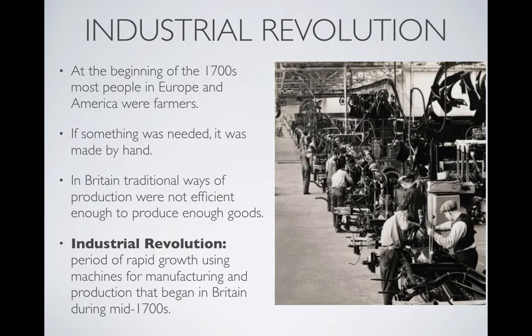However, in about the mid-1700s in Great Britain, the traditional way of producing things was not efficient enough to produce enough products. Britain's population was rapidly expanding and they needed newer ways to make higher quality manufactured goods, but also many more of them. This desire to more efficiently produce manufactured goods led to what's known as the Industrial Revolution — the period of rapid growth using machines for manufacturing and production that began in Great Britain during the mid-1700s.